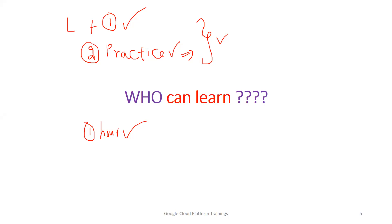How many months does Google provide free tier services? Google is providing free tier services — it's been for the last three to four years. For this entire year, for sure it is free tier only. $300 will be provided by Google — that is the maximum available. Even if four people are working on the same GCP account, you may not utilize the entire $300.